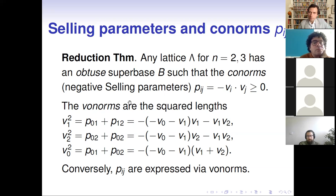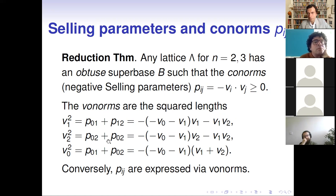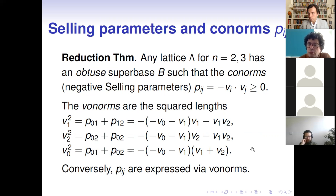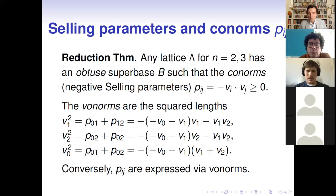Co-norms are defined as minus v_i · v_j, so the scalar product itself should be non-positive, meaning every angle is non-acute. The dual objects are called vo-norms, which are simply the squared lengths of the super base vectors: v1 squared, v2 squared, v0 squared. There are very nice relations between vo-norms and co-norms. In the two-dimensional case, three co-norms are expressible in terms of three vo-norms, and conversely.